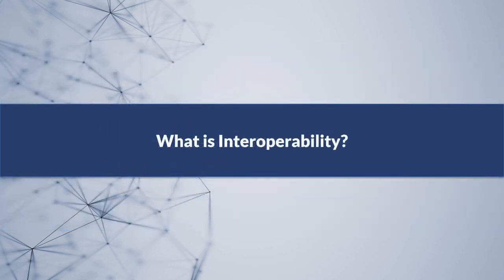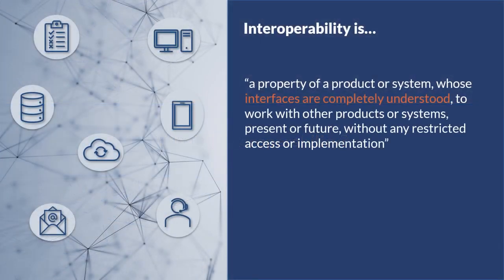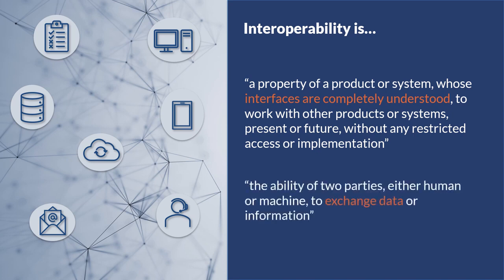Let's begin by defining interoperability and examining the two main types of interoperability. There are many different definitions of interoperability depending on where you look. Wikipedia defines interoperability as a property of a product or system whose interfaces are completely understood to work with other products or systems, present or future, without any restricted access or implementation. Other sources define interoperability as the ability of two parties, either human or machine, to exchange data or information.